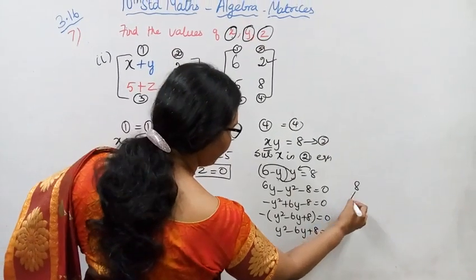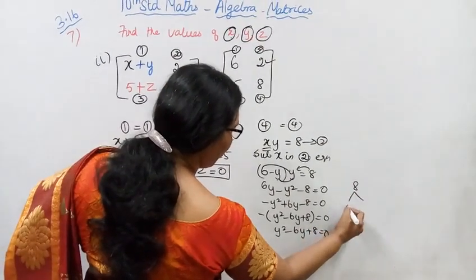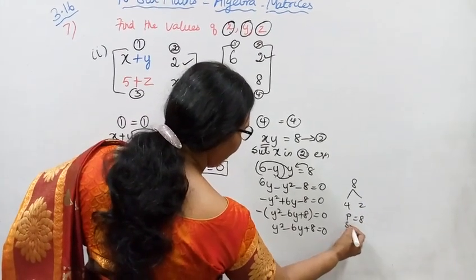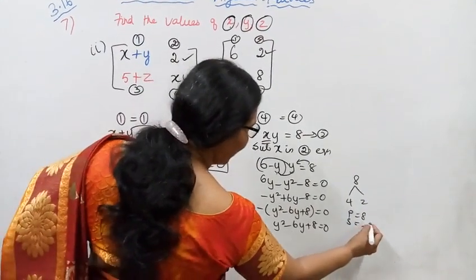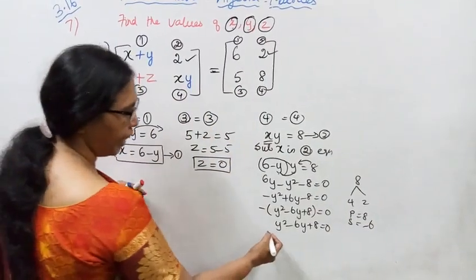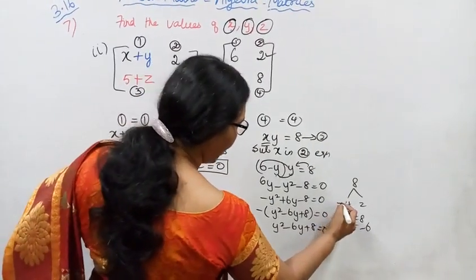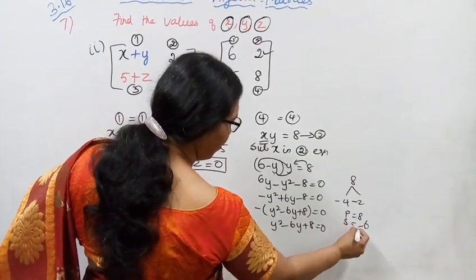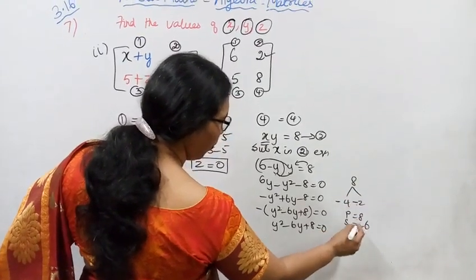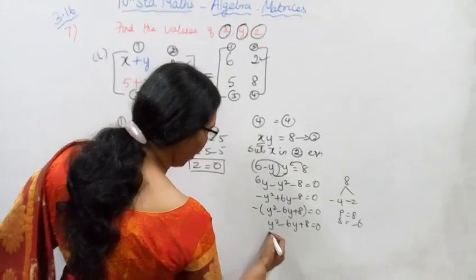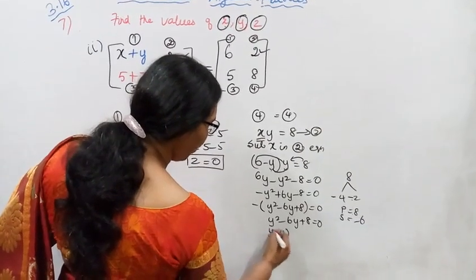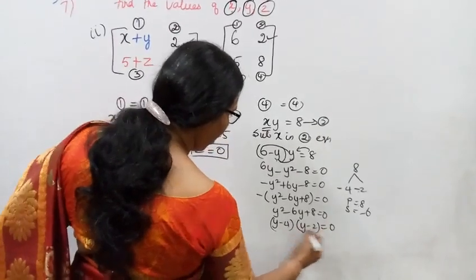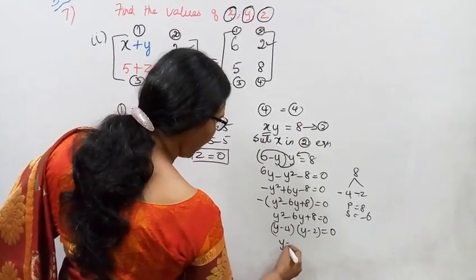Factorizing y squared minus 6y plus 8: the product is 8 and the sum is minus 6. So the factors are minus 4 and minus 2, giving us: y minus 4 times y minus 2 equal to 0. Therefore y equal to 4 or y equal to 2.